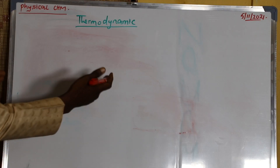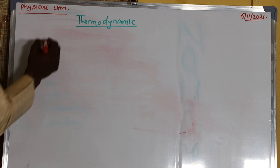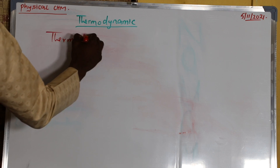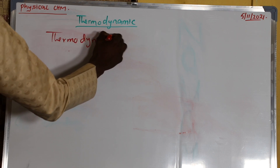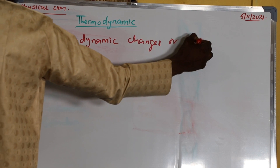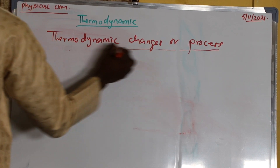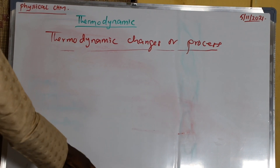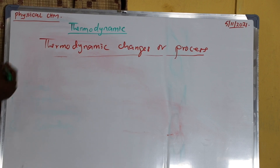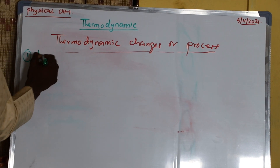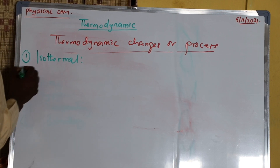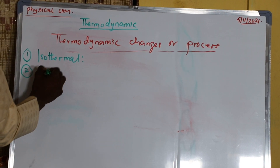So now let's go directly into thermodynamic changes or processes. We have different thermodynamic changes and processes. The first one is isothermal. The second is adiabatic.